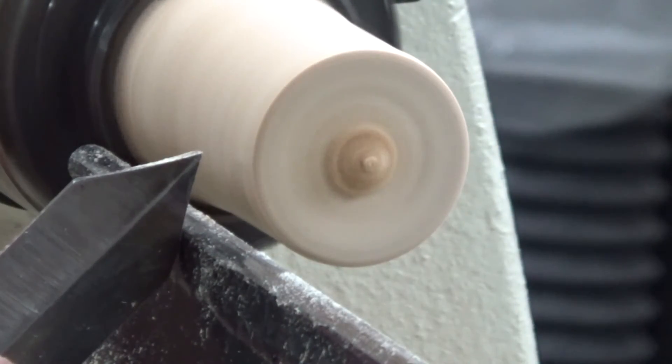Another use of the tool would be to square off the end of a spindle that's mounted on a chuck.